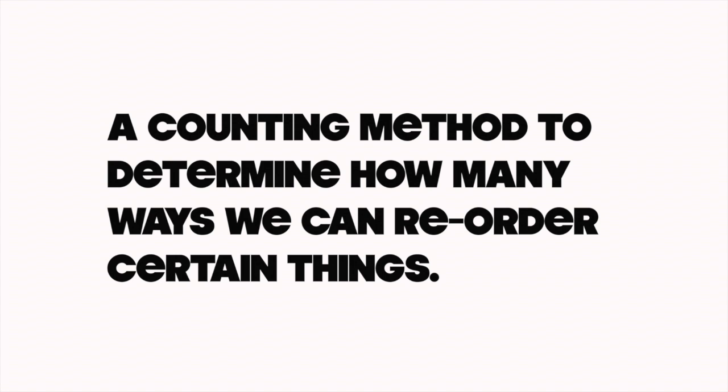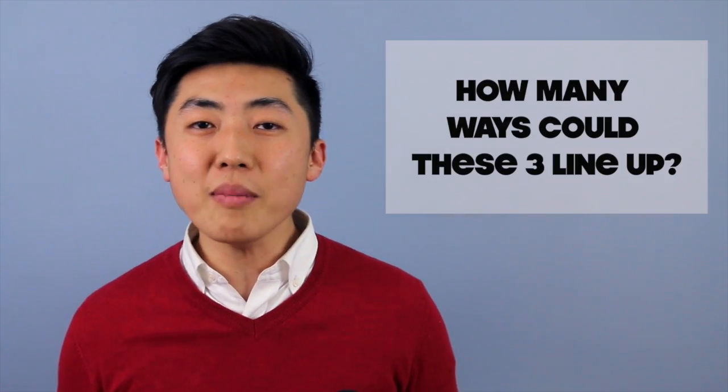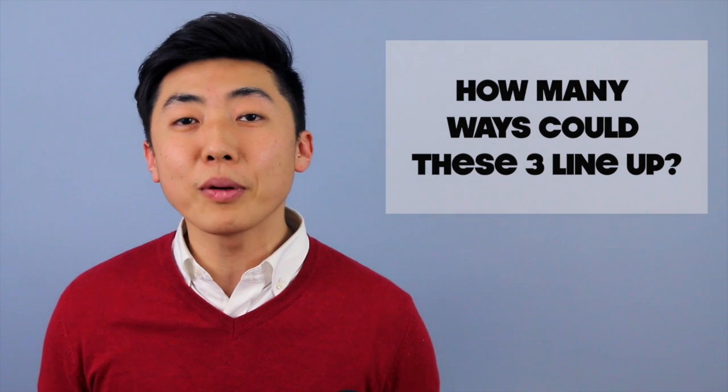Well, a permutation is really a counting method, telling us how many ways we can reorder certain things. And let's say that we have Alex, Bob, and Charlie. And the question is, how many ways could these three people line up?